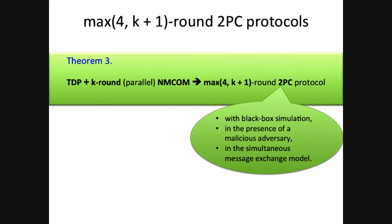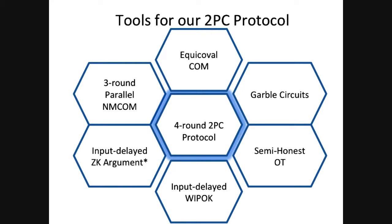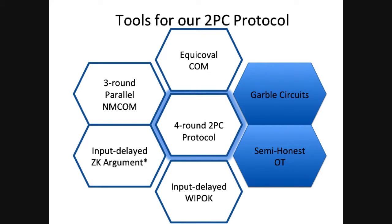Here is our theorem: assuming the existence of trapdoor permutations plus a k-round parallel non-malleable commitment, we can give a protocol with max(4, k+1) rounds, with black-box simulation, malicious adversaries, and in the simultaneous message exchange model. The tools of our protocol include non-malleable commitments, zero-knowledge arguments of knowledge, witness-indistinguishable proofs, garbled circuits, and semi-honest OT to compute the function.